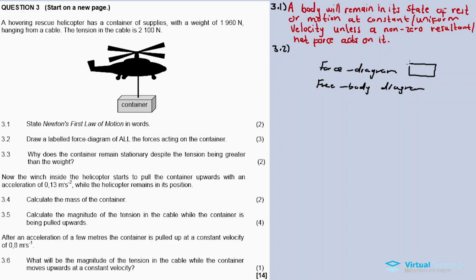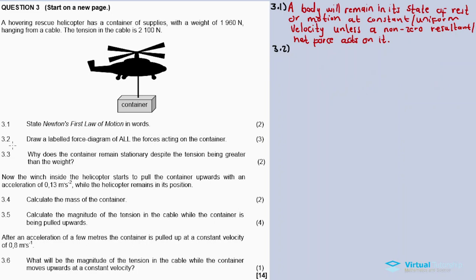Those are the two differences between the two diagrams. Now for 3.2 we draw a free body diagram - so draw the container as a box. It's worth 3 marks.